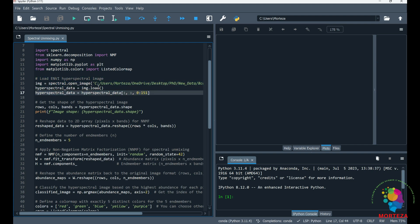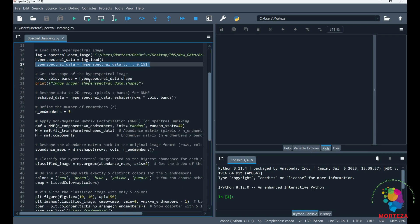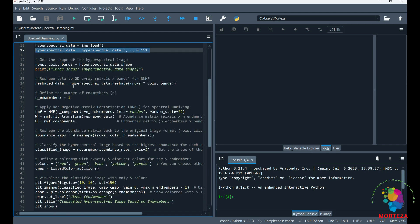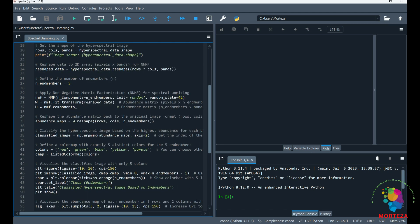The last band in my hyperspectral data is NaN, so I'm just excluding that band. You might not need to do this step. And then I'm just showing the rows and columns and the bands of my hyperspectral data. And I'm going to be reshaping it to apply the NNMF.